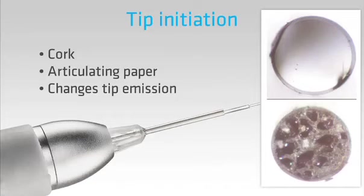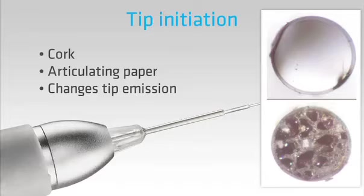Now let's return to the process of initiating the tip. We can do this by wiping the tip across a cork or over carbon articulating paper. The purpose of initiation is to change the pattern of energy emission. In simple terms, it constrains the laser energy in space.